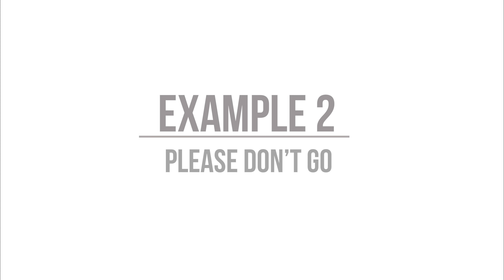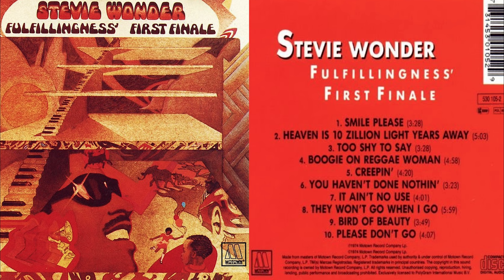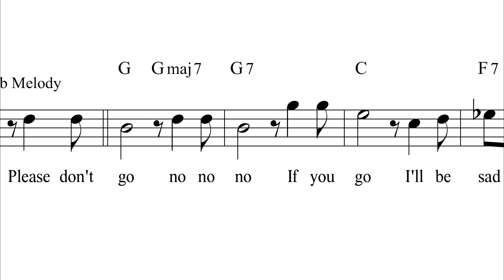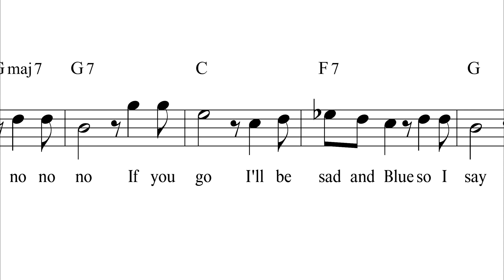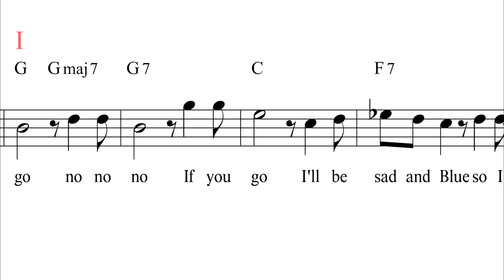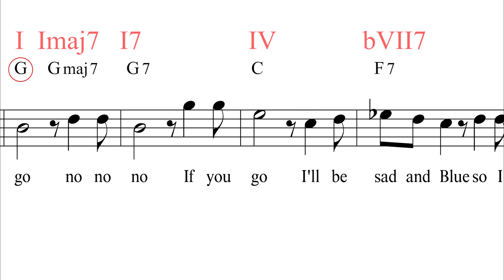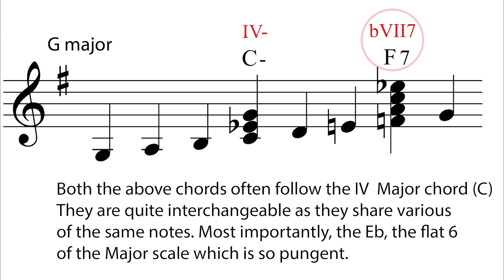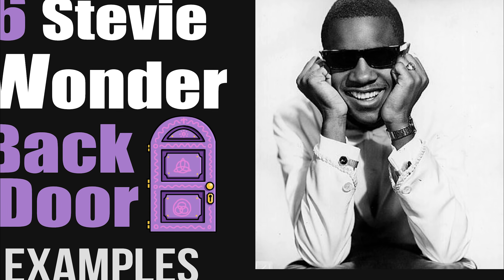Example 2: Please Don't Go, 1974, from Fulfillingness' First Finale. Very similar to the first example, but in G major. So in G major: chord I, then chord I major 7, then I7 — also known as V7 of 4 — to 4, to 4 and flat 7, 7. So this time after chord 4 we hear flat 7, 7, which is a substitute for 4 minor. Both of these are backdoor chords. See this video if you would like to discover more about this emotional, soulful cadence.